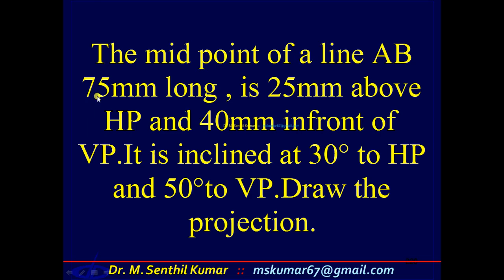Otherwise there is no difference from the previous problems. The problem states: the midpoint of a line AB, 75mm long, is 25mm above HP and 40mm in front of VP. It is inclined at 30 degrees to HP and 50 degrees to VP. Draw the projection.